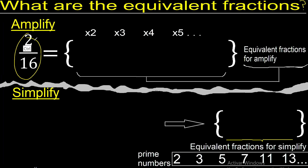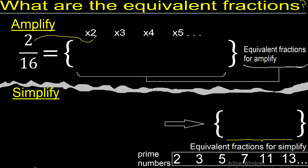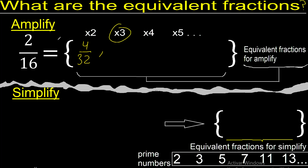First, multiply by 2. 2 times 2 is 4. 16 times 2 is 32. Now multiply by 3.